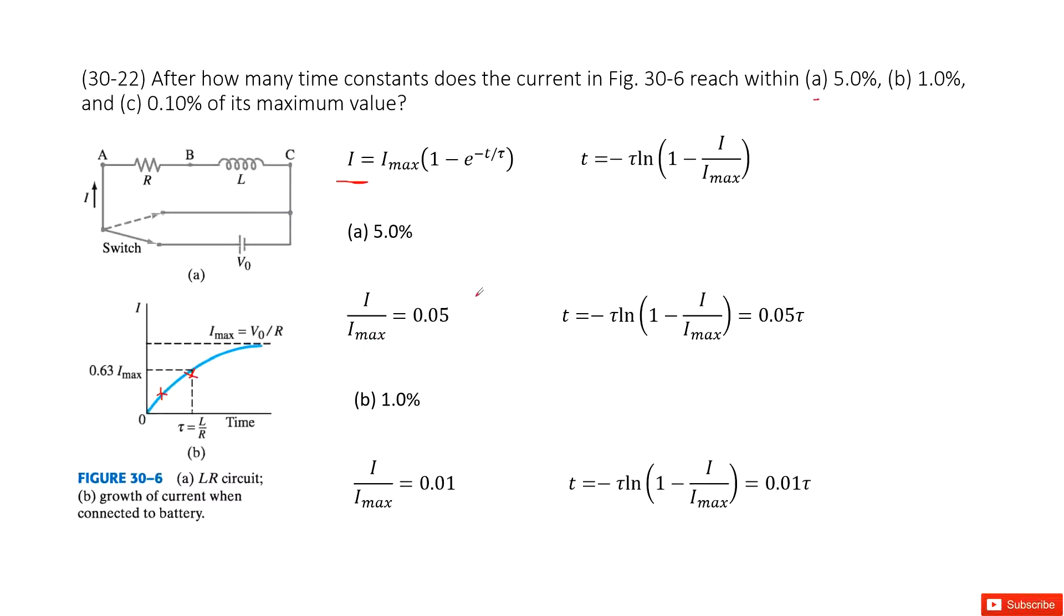And then we can input the ratio I over Imax in this equation, and we get the number. The value is 0.05τ.